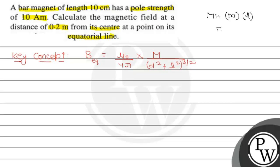The pole strength is given as 10 ampere meter and bar magnet length is 10 centimeter, so I can take 0.1. So m equals 1 ampere meter square.